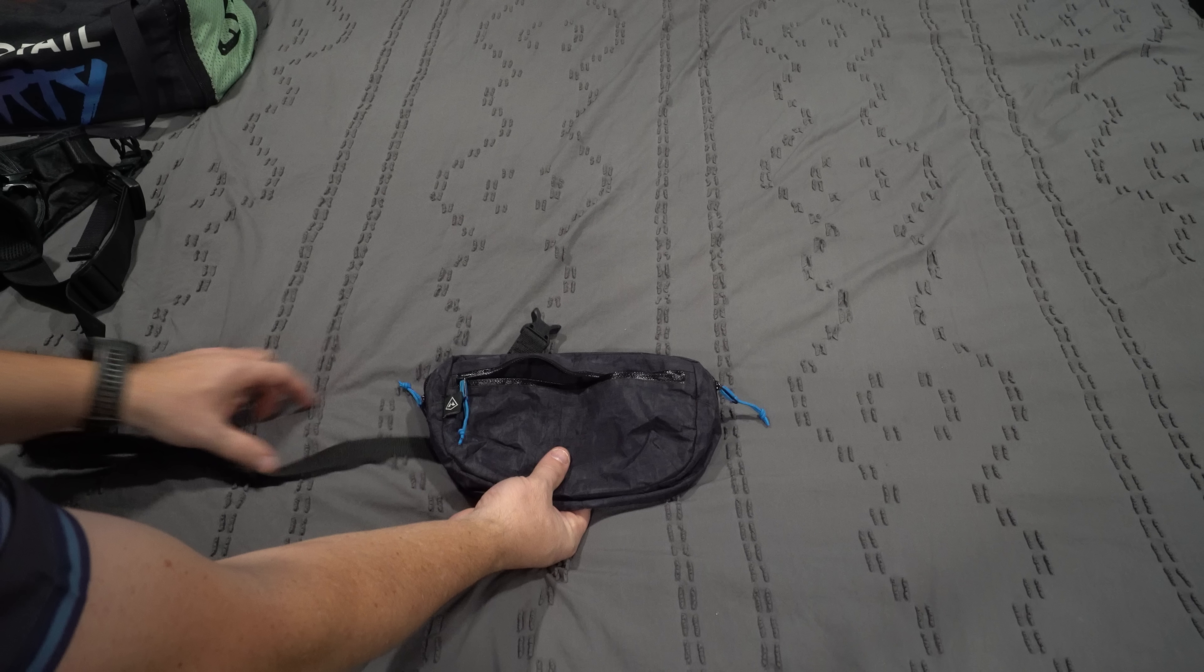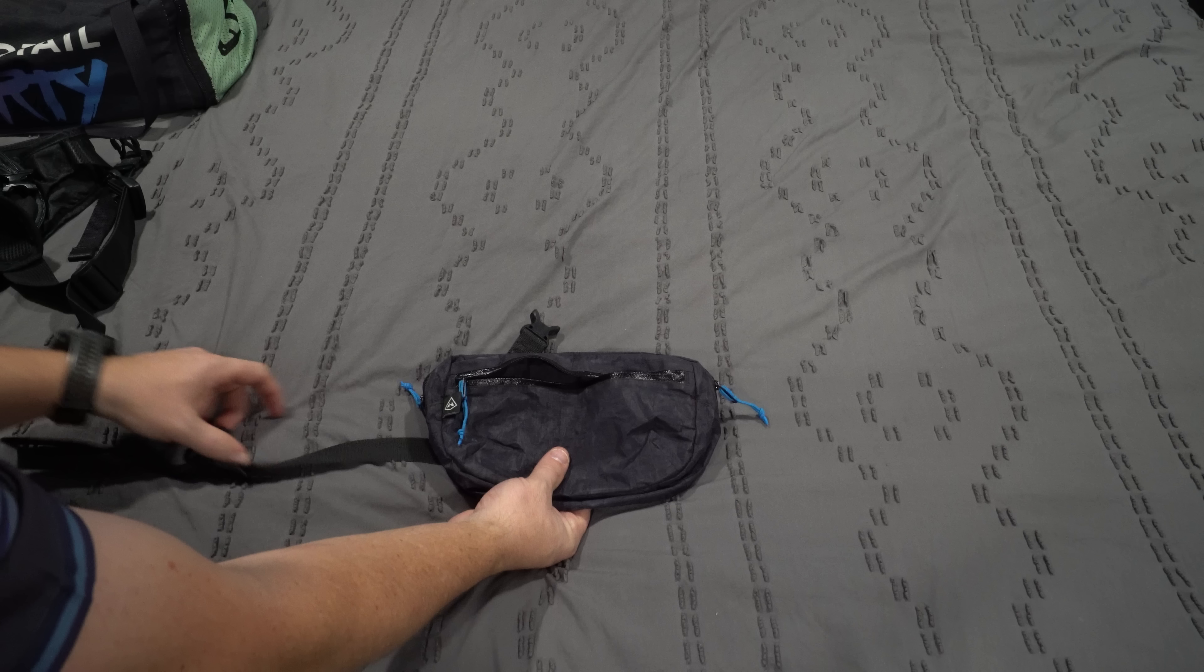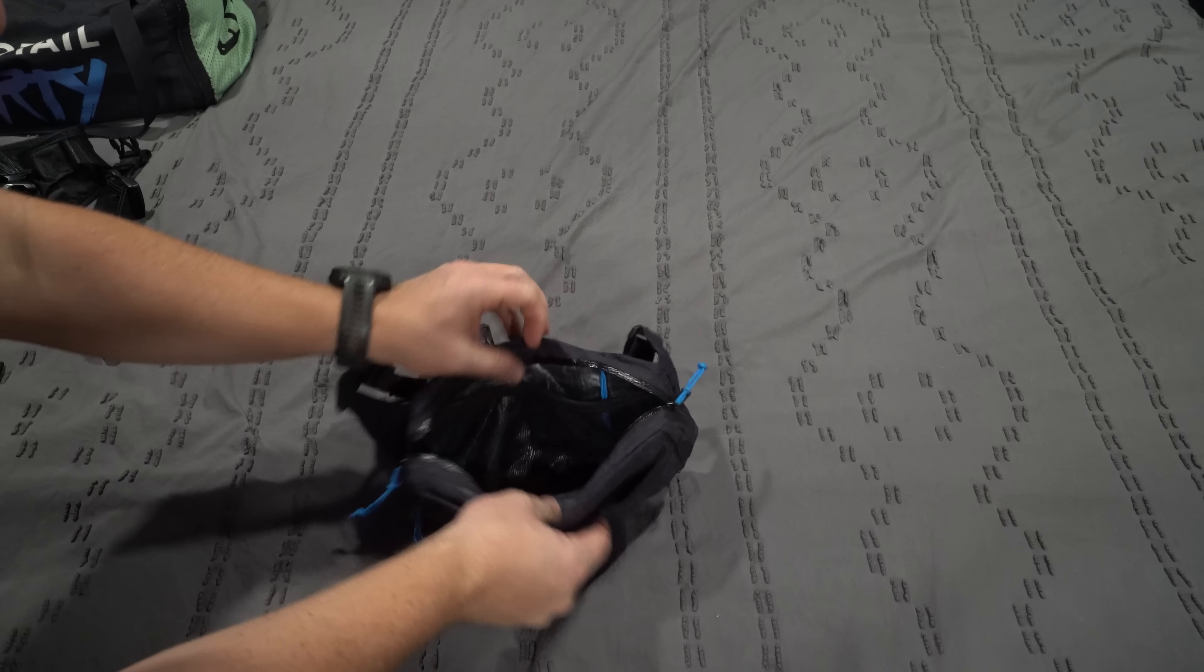Next up is my favorite minimalist hip pack. It's made by Hyperlite Mountain Gear. They make my favorite shelters, my favorite backpacking bags. They use this Dyneema material, which is very similar to the threads used on bird spokes. It's super light.